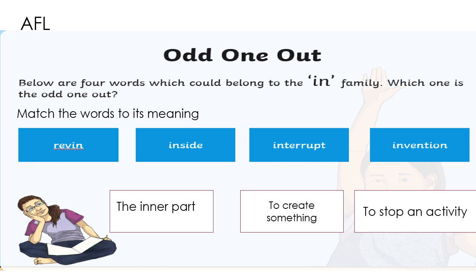Here's your AFL. Read the question and find the odd one out. Below are four words which could belong to the 'in-' family. Which one is the odd one out? Match the words to their meaning. The four words are: raven, inside, interrupt, invention. The odd one out is 'raven'. Now let's match the words to their meanings: inside — the inner part; interrupt — to stop an activity; invention — to create something.